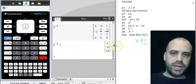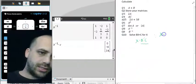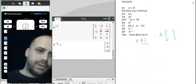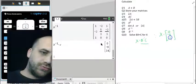And we have an answer, therefore, x equals that matrix, 0, negative 8, 14.